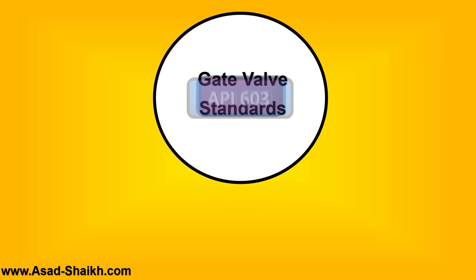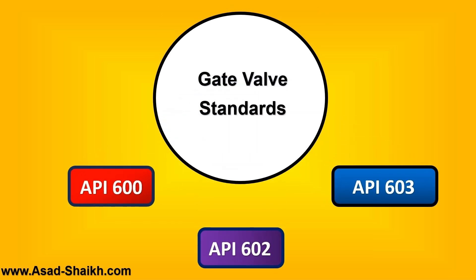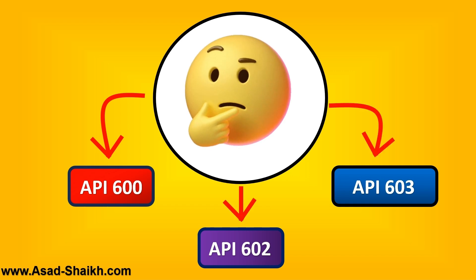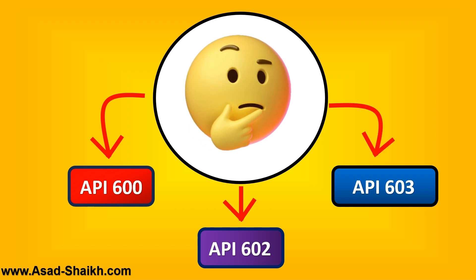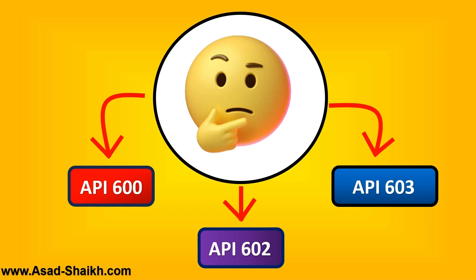For gate valves, which of the following is the applicable API standard: API 600, API 602, or API 603? What do you think is the answer?